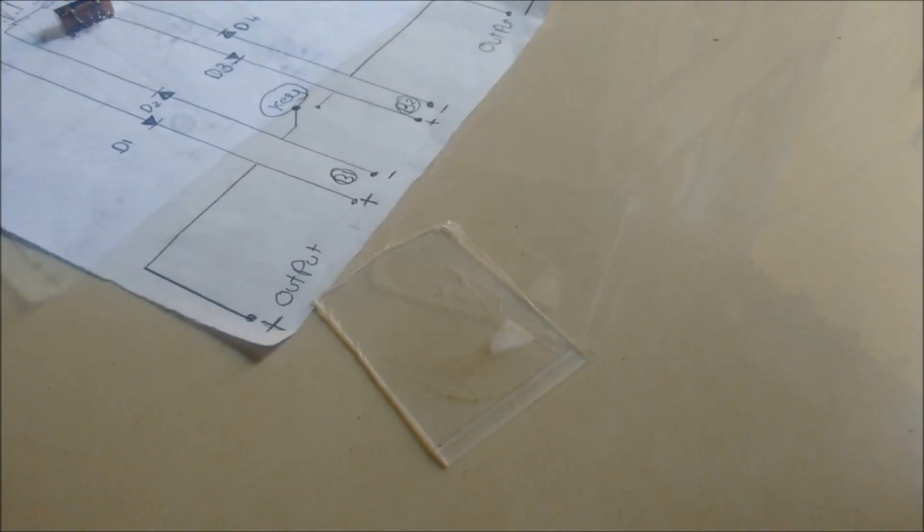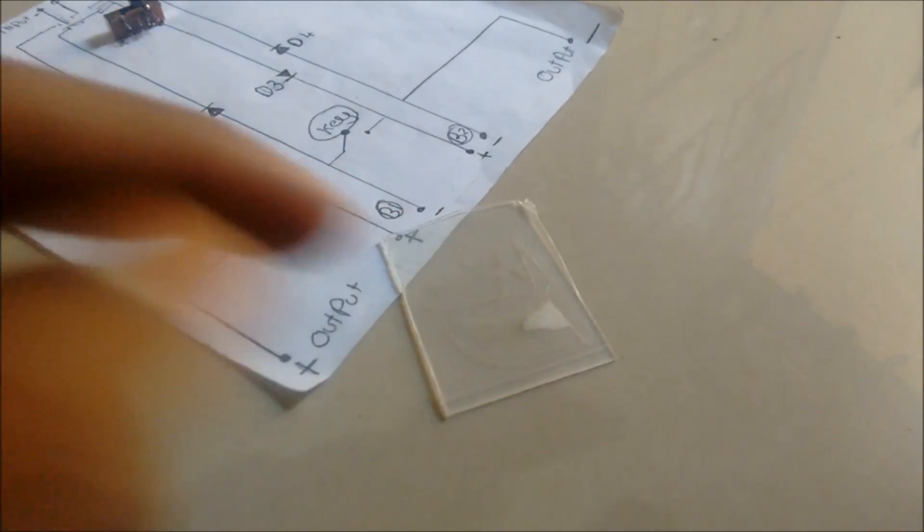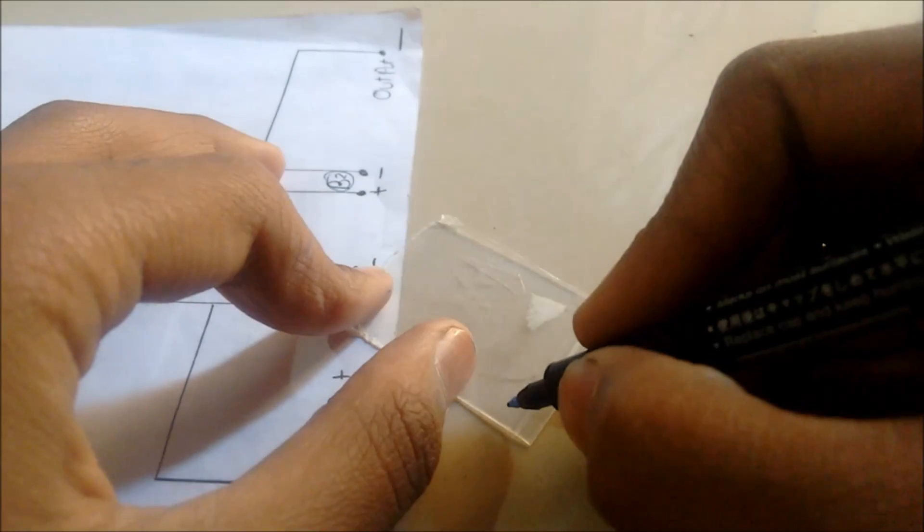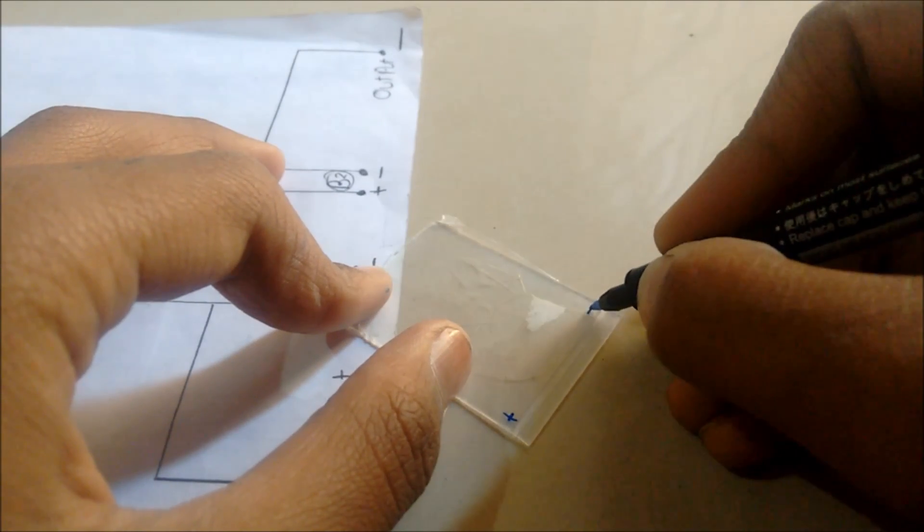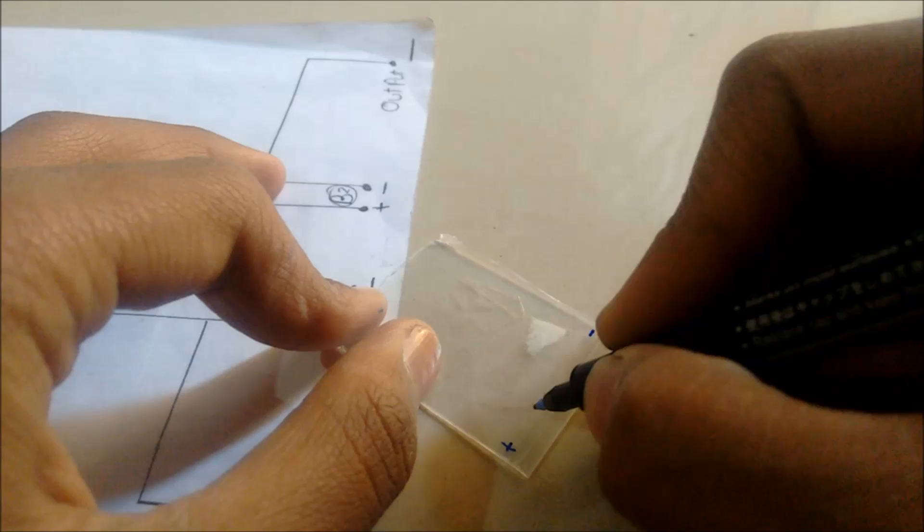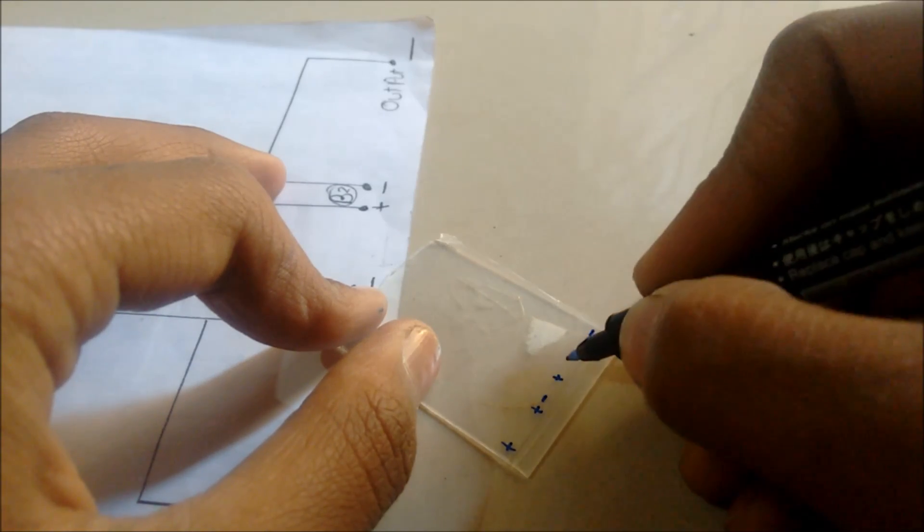To build it, we need to draw the circuit on this plastic. Here is positive output, here is negative output, battery positive, and battery two.